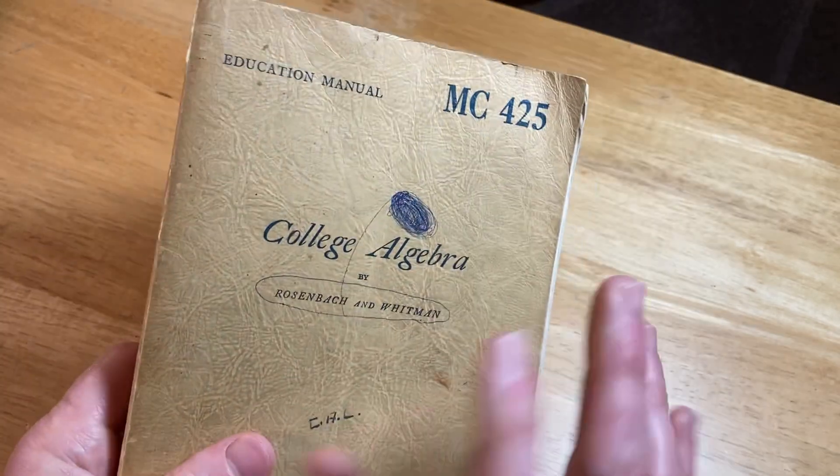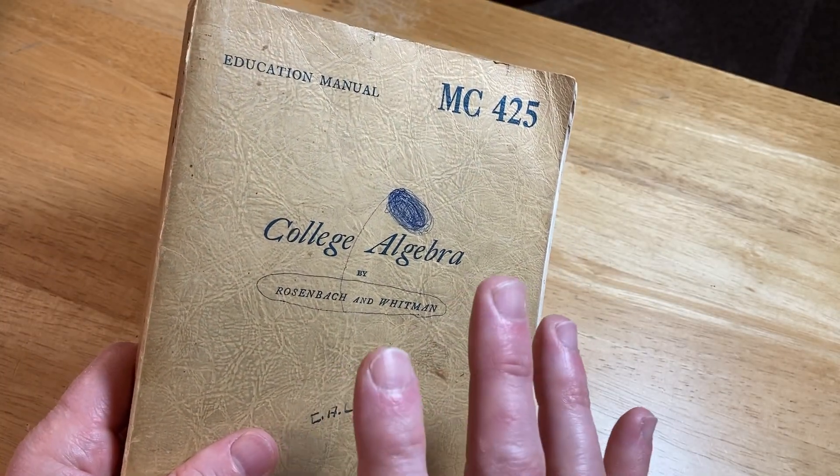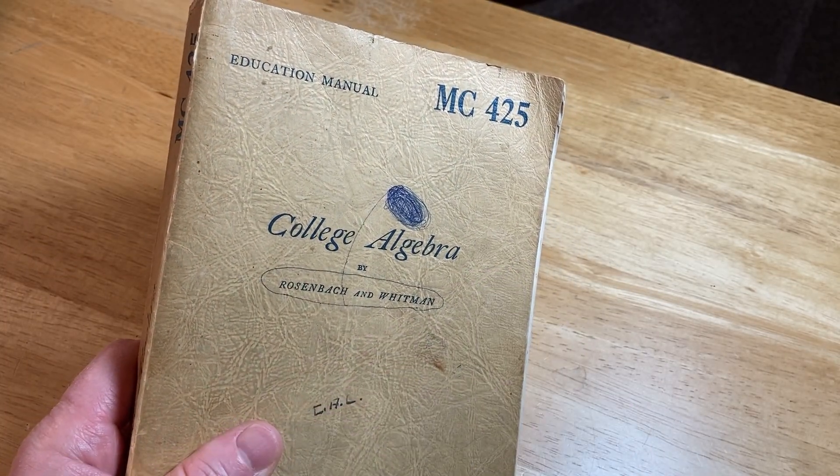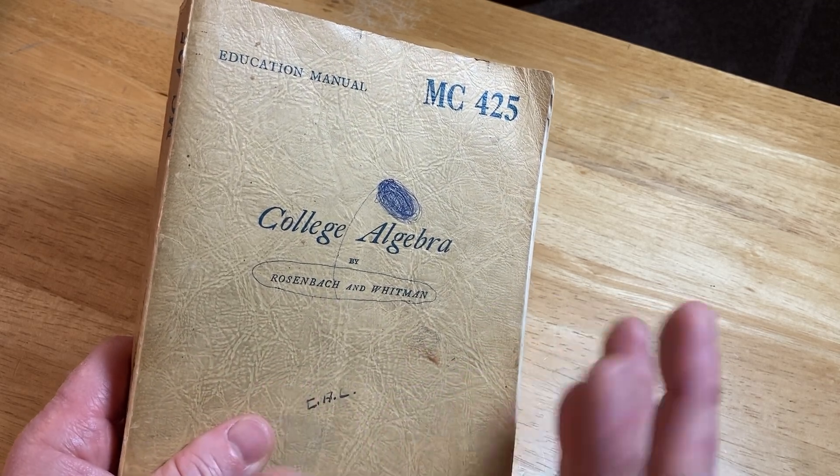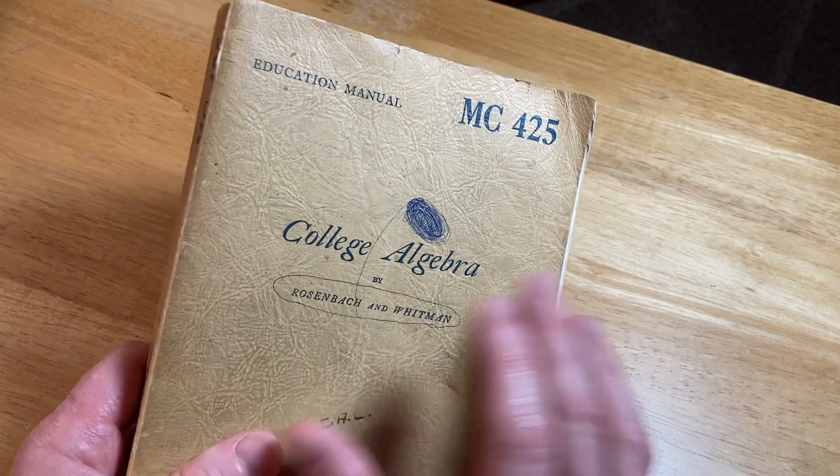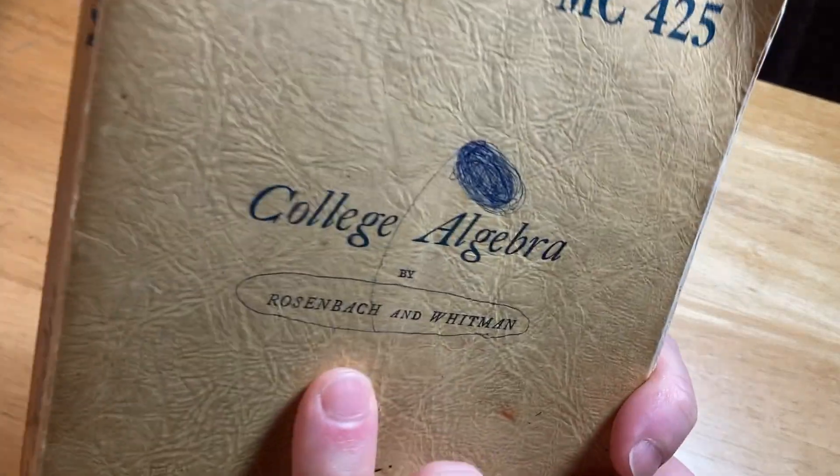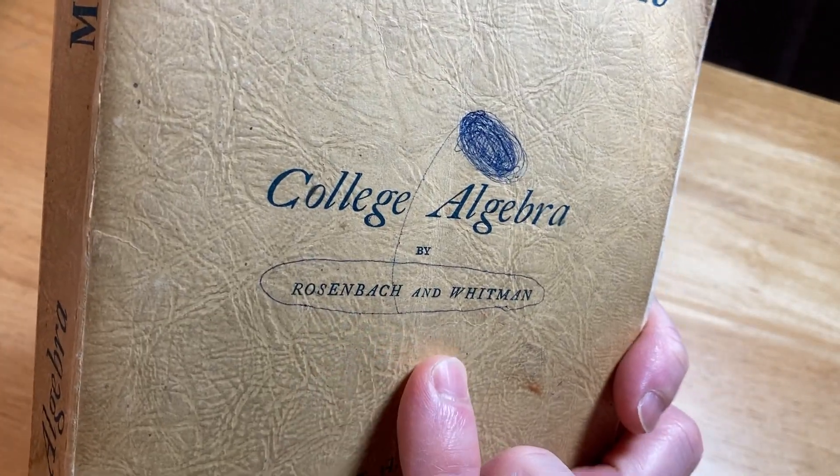They were the best books. They would take the books that were very popular, widely regarded, and there was some process that they underwent to choose the books. The one that was chosen was the one by Rosenbach and Whitman to reprint here.